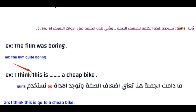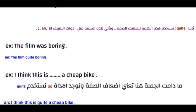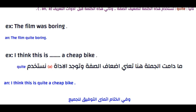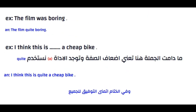مثال آخر: I think this is — فراغ — a cheap bike. الدراجة رخيصة، وهذه صفة ضعيفة نريد تضعيفها، ولأن الجملة تحتوي على أداة التعريف 'a' فنستخدم 'quite'. الجواب: I think this is quite a cheap bike.